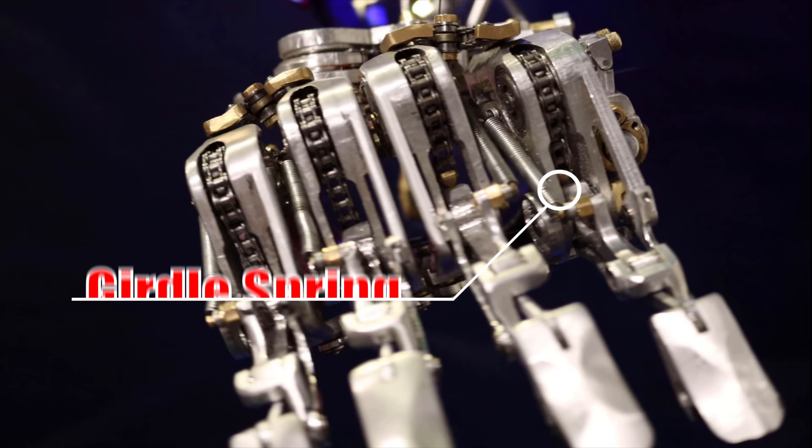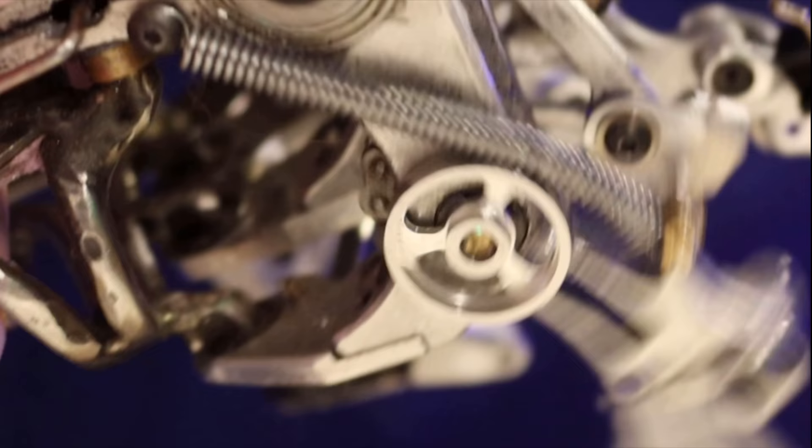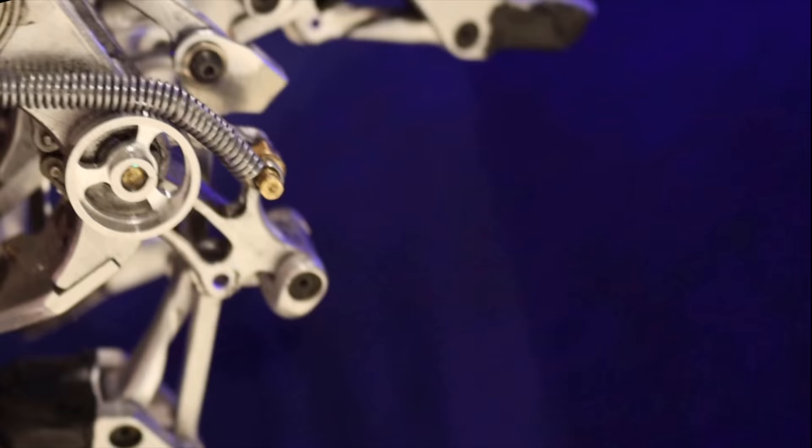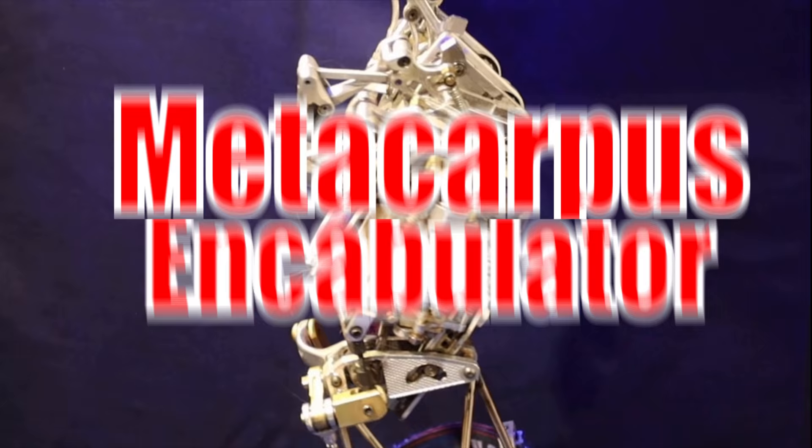Girdle springs occupying the up end of the metacarpal bases produce somatic refraction in the up direction relative to the proximals, thus maintaining the erection of the extremity. I present to you the new and improved metacarpus encabulator.